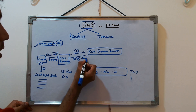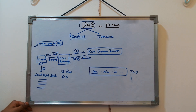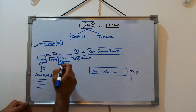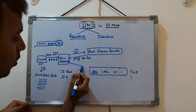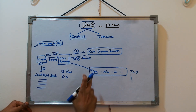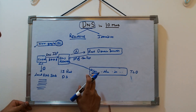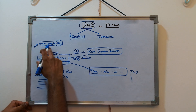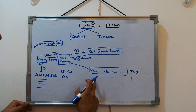The root domain server knows you are trying to reach something under dot com, so the dot com TLD server might be able to help. It passes the IP of the dot com TLD server. The recursive DNS resolver now talks directly to the dot com server.